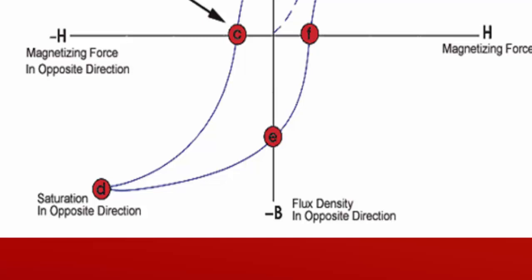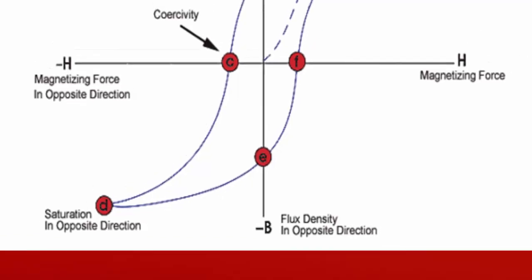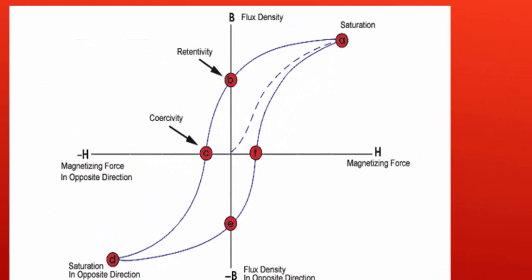Increasing H back in positive direction will return B to zero. One thing which you need to notice here is that the curve did not return to origin of the graph because some force is required to remove the residual magnetism. The curve will take a different path and it will lead to point F as shown in the graph. And this is said as BH curve or hysteresis loop and this is how it works.